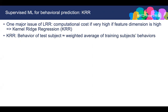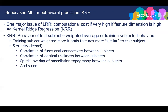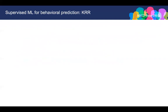Roughly speaking, what kernel ridge regression does is that the behavior of a test subject is estimated as the weighted average of all training subjects' behaviors. A training subject is weighted more if its brain features are more similar to the test subject's. This similarity can be defined based on correlation of brain features between subjects, such as functional connectivity or cortical thickness. It can also be defined in other ways, such as the spatial overlap of parcellation topography between subjects.